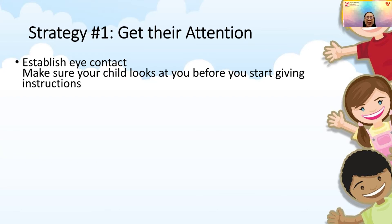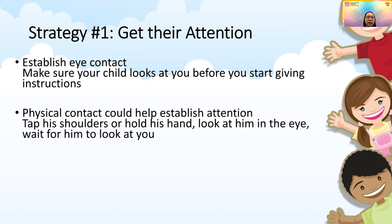Very often in modern times, especially with working from home, we'll be using our phone and talking to our kid and expecting them to respond. But we should put away our devices, look them in the eye, and make sure your child is looking back at you before you give instructions — so you know their selective attention is on you and no other distractions are fighting for their attention. Physical contact can also help establish attention. Not all children are very visual or auditory; some kids are more kinesthetic and physical, so sometimes you just need to tap them on the shoulder or hold their hand and wait for them to look back at you before giving an instruction.